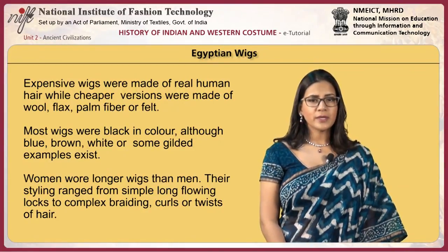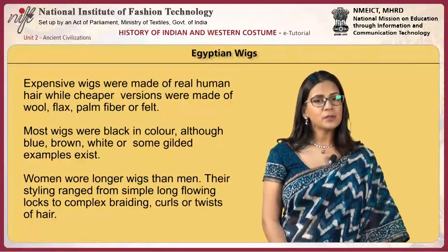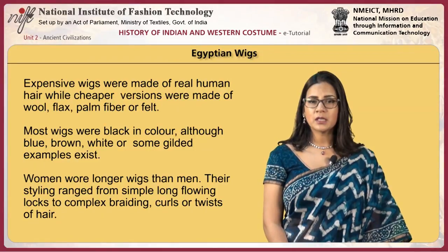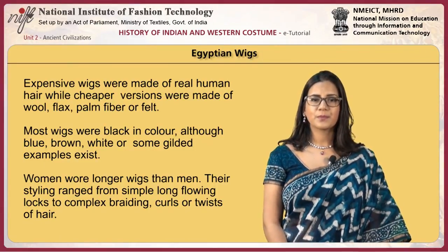Women wore longer wigs than men, ranging from simple long flowing locks to complex braiding, curls or twists of hair. Egyptians developed artificial beards or beard wigs. Men of royal rank tied stubby beards on their chins for official or festive occasions. The king's beard was longer than that of other men and was usually worn straight and thick. Gods were depicted with thinner beards that curled up at the tip. Egyptians believed that kings were descended from the gods, and in some ceremonies kings wore a curved beard to show that they represented gods.